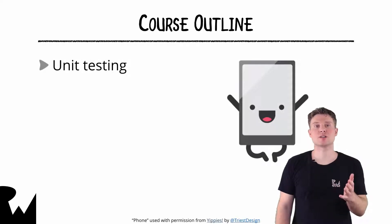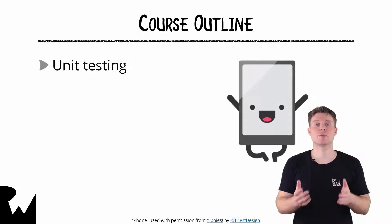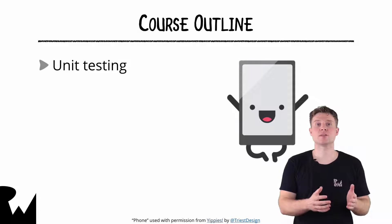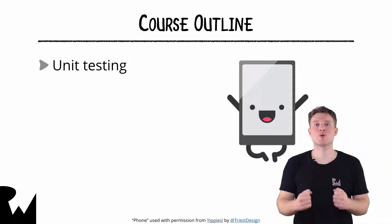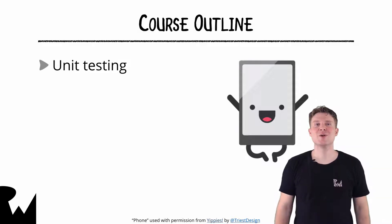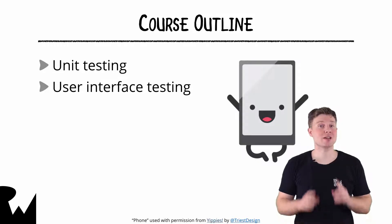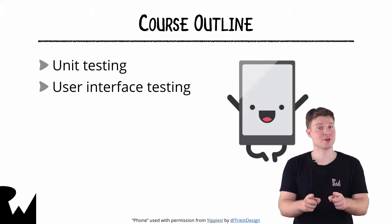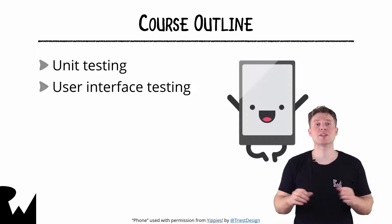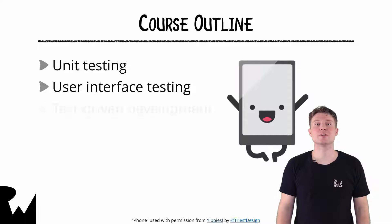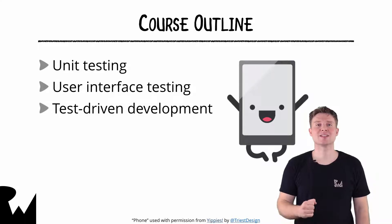We'll start with unit testing, including how to create a test target, write tests, create mocks, and more. We'll then cover user interface, or UI testing for short. This will include how to both manually write tests and how to get Xcode to do it for you. To wrap things up, you'll work through a hands-on example to learn about test-driven development.